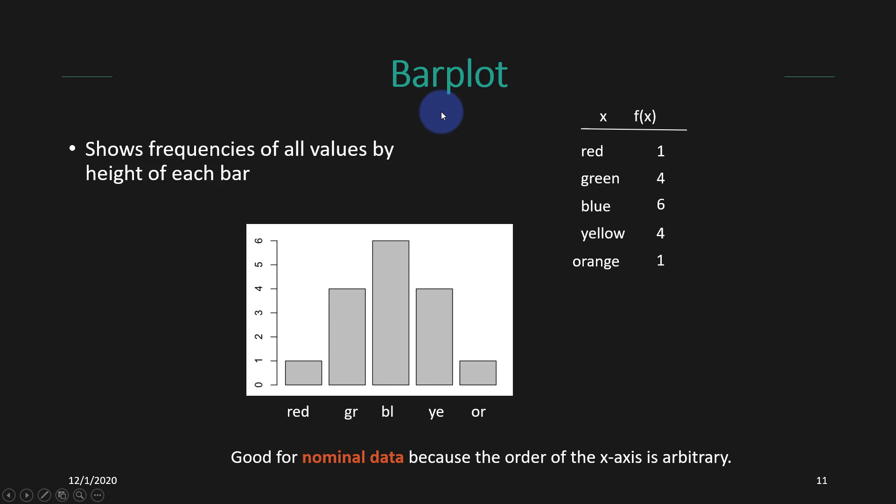Taking that a step further, we can essentially flip our frequency table on its side and create a bar plot. The bar plot is going to show the frequency of all values based on the height of a specific bar. If I had people responding with their favorite colors, maybe this is the distribution that I actually get in my sample, and I create this frequency table. It's a pretty good summary, and you can look at it and understand it pretty quickly. But I can also convert this into a bar plot, where now I'm showing you the number of people who picked red, green, blue, yellow, or orange.